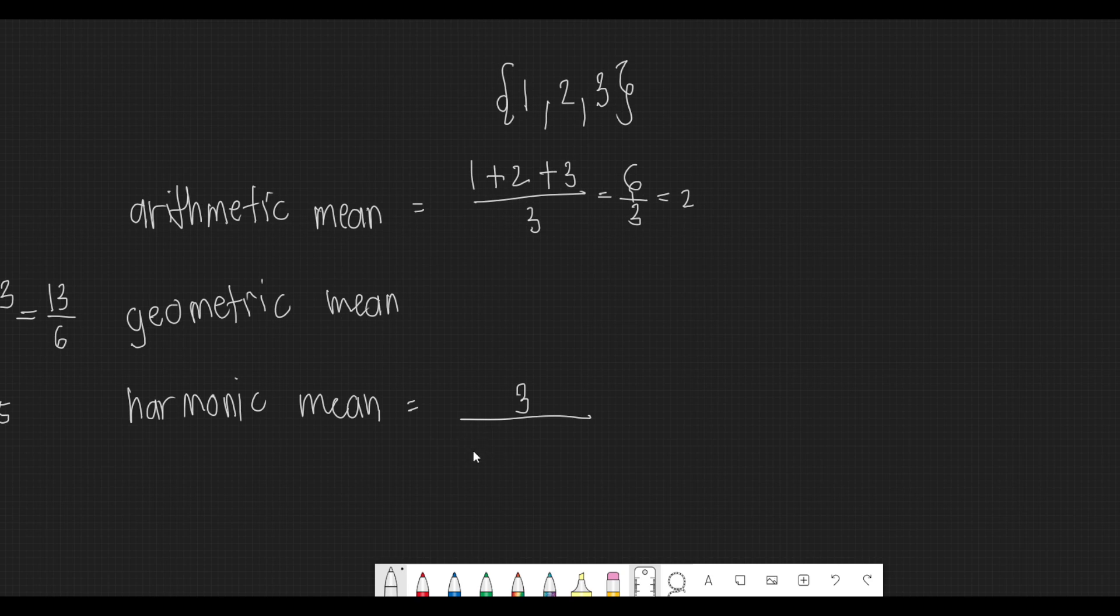So our denominator becomes our numerator. So that would be 3 divided by our numerator. But our values for the numerator would also need to be flipped. So it would be 1 over 1 plus 1 over 2 plus 1 over 3.